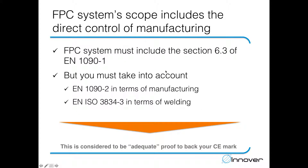We'll take a much better look at what must be included in the FPC system shortly, but here I want to emphasize again that the FPC system scope must include the direct control of manufacturing — because you need to have the proof to back up your CE marking and the declaration of performance.